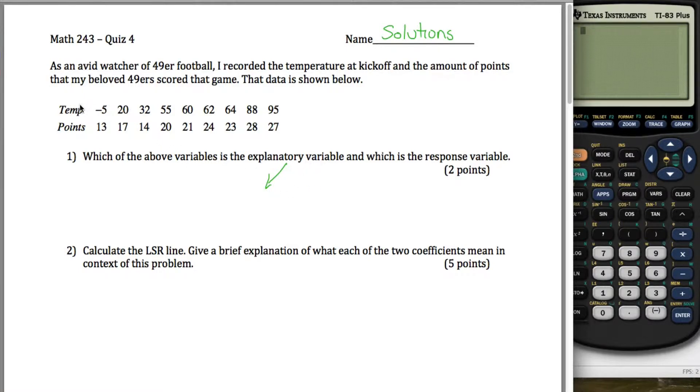The temperature outside might cause the 49ers to score less points. But the amount of points the 49ers score is not going to cause the temperature to be colder. They're not going to change the weather. In other words, the temperature is the cause and the points are the effect. So the temperature is the explanatory variable, and then the response variable would be points.